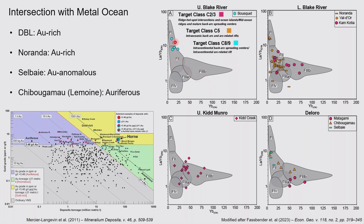If you go back and look at these different camps, the gold-rich camps will often span both F2 and F3 and F1s. That's true for DBL, it's true for Noranda, Selby, Le Moyne in the Shibugami camp. Some of these other camps that do not have any gold-rich deposits are only in the F2 and F3. So maybe there's some refining there that we can do with respect to gold-rich deposits, and also how this might show that there are multiple different tectonic settings within the Abitibi at the same time, just as they see in the modern ocean.